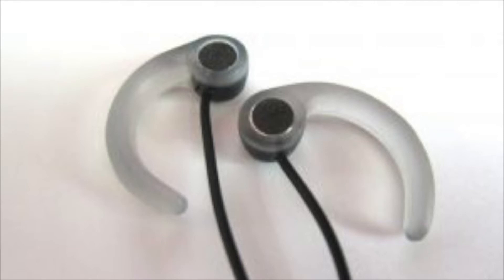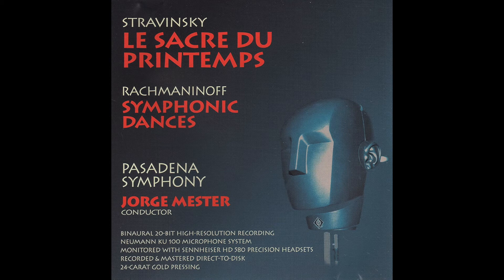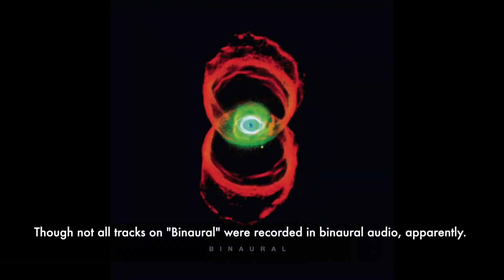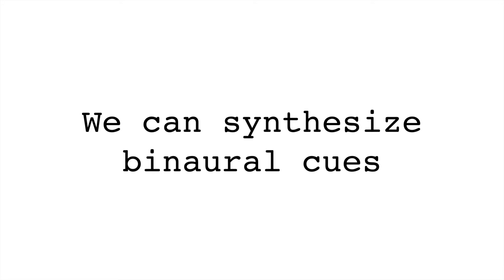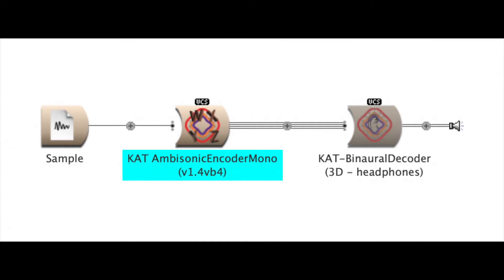The placement of these microphones mirrors the placement of the ears on a person's head, and these microphones might be placed either on a real human head or on a dummy head. There are a number of albums recorded this way, including a famous recording of Stravinsky's Rite of Spring by the Pasadena Symphony, and even the Pearl Jam album Binaural. Importantly, binaural playback doesn't necessarily require binaural recording — the interaural differences can be synthesized. You could use plugins or real-time processing to generate binaural sound from mono or stereo recordings, or even to derive binaural from ambisonics or Dolby Atmos.